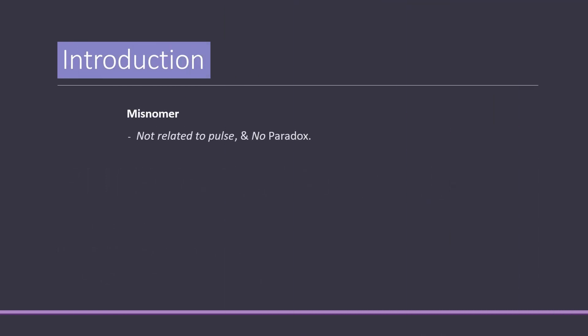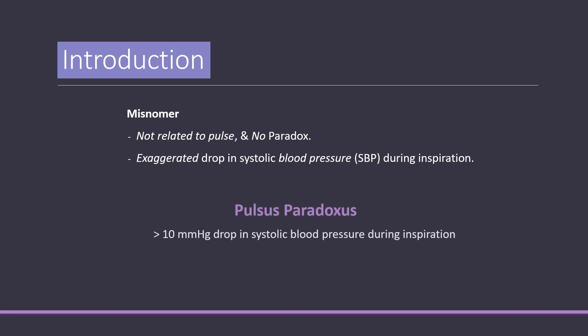Pulsus paradoxus is actually a misnomer, because the phenomenon is neither related to the pulse, nor is there any paradoxical change in the described sign. In fact, pulsus paradoxus is related to blood pressure, and there is an exaggerated — and not paradoxical — drop in blood pressure during inspiration. Normally, there is a small drop in systolic pressure of less than 10 mmHg during the inspiratory phase. Pulsus paradoxus is simply a greater than 10 mmHg drop in systolic blood pressure during inspiration.